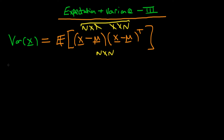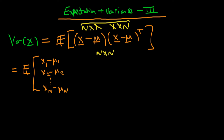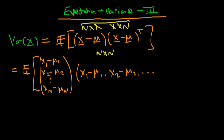So let's prove this adds up to what we had before by thinking about it element-wise. The first part is a column vector with elements x1 minus mu1, x2 minus mu2, continuing down to xn minus mun. The second term is just that first term transposed, so it's a row vector with components x1 minus mu1, x2 minus mu2, continuing up to xn minus mun.